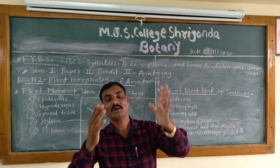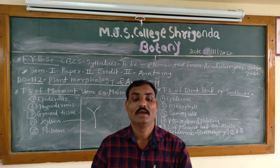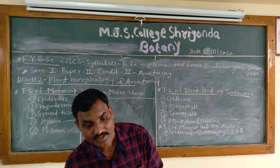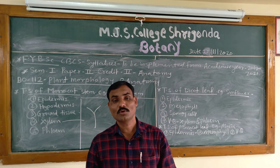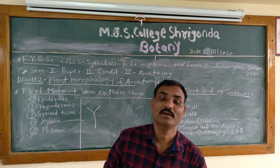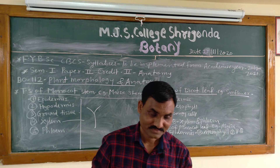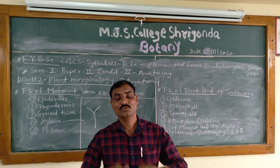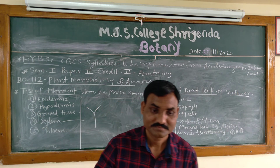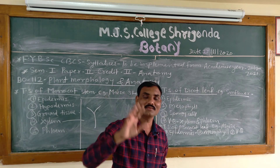Xylem lies toward the upper adaxial surface and is composed of annular and spirally thickened vessels, tracheids, fibres, and xylem parenchyma. In large-sized vascular bundles, protoxylem lies toward the upper surface and metaxylem toward the lower side. In smaller vascular bundles the two types of xylem elements remain indistinct. Phloem lies toward the lower epidermis and consists of sieve tubes, companion cells, and phloem parenchyma.